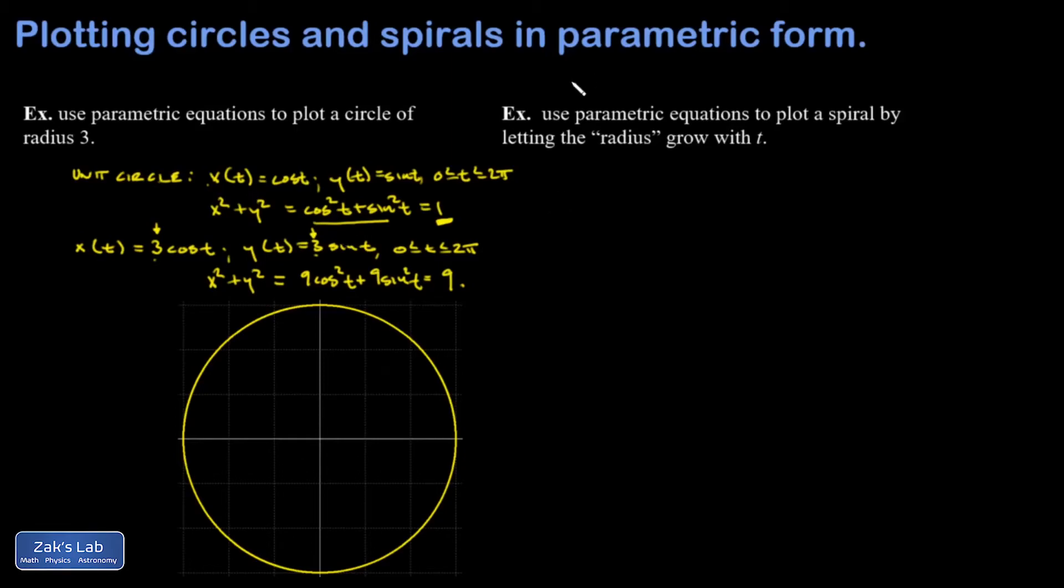I didn't want the radius to grow too fast, so my first idea was like this: I'm having the radius grow linearly with t, and I put a 0.1 there so it wouldn't grow too fast, because I want a nice looking tight spiral.